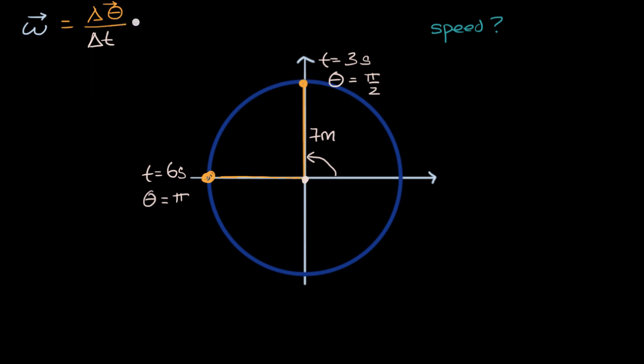So delta t. And so what is this going to be? Well this is going to be our angular displacement, our final angle is pi radians, minus our initial angle, pi over two radians. And then all of that is going to be over our change in time, which is six seconds, which is our final time minus our initial time, minus three seconds.